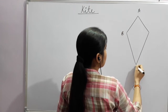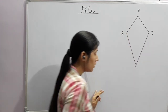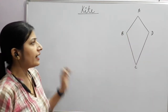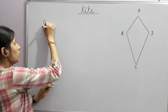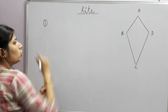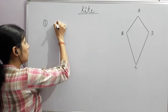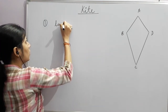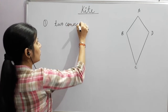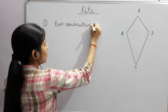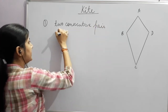We name it A, B, C, and D. The first property of a kite is: two consecutive pairs of sides are equal.